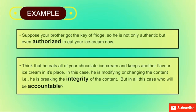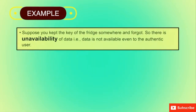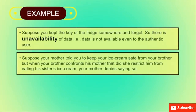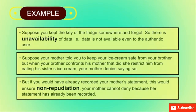In this case, who is accountable? You, because you were supposed to keep the key safely. If you kept the key somewhere and forgot, there is unavailability of data — the data is not available even to the authentic user. Now suppose your mother told you to keep your ice cream safe, but later denies having said so. If you had already recorded her statement, that would ensure non-repudiation — your mother could not deny because her statement was recorded.